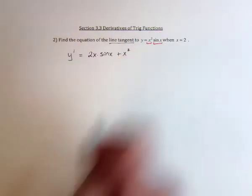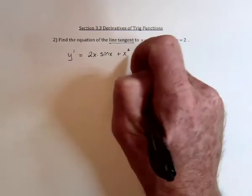leave the x squared function alone, and take the derivative of sine, which is cosine.